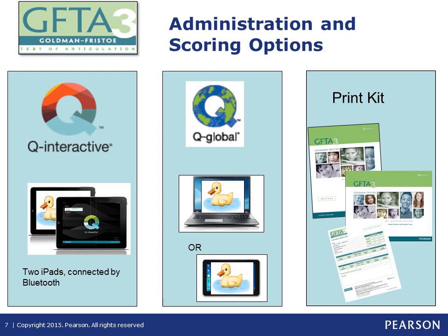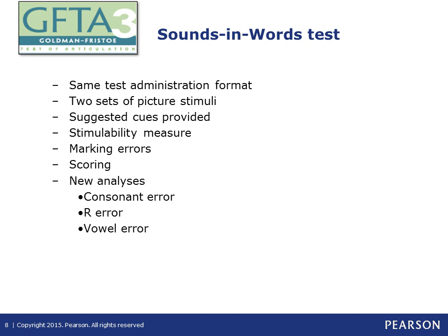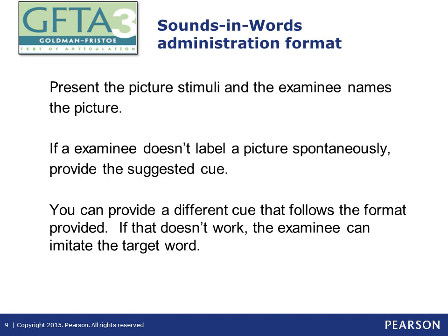Let's talk about the sounds and words test. There's good news in that there's no need to learn a new test format if you're already used to GFTA 2. You present stimulus pictures and the individual names those pictures. If the child doesn't label a picture spontaneously, you provide a suggested cue or a different cue that follows the provided format. If that doesn't work, you can ask the child to imitate the target sound that you produce.